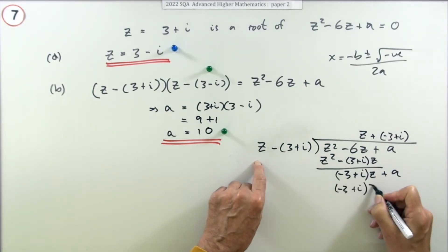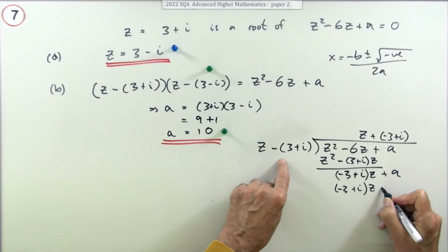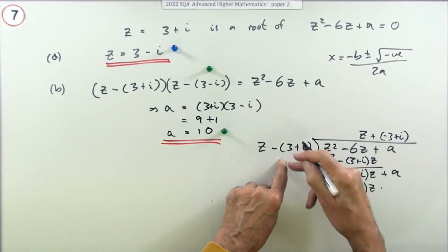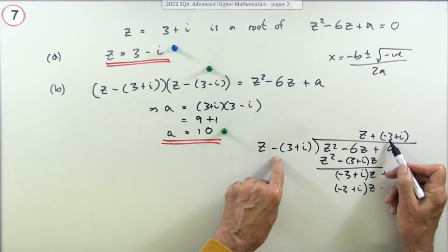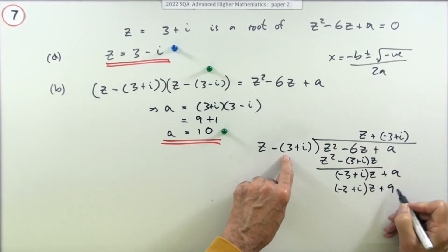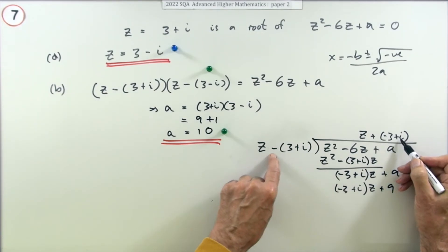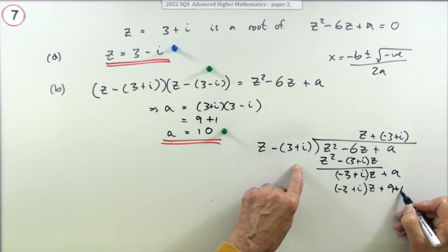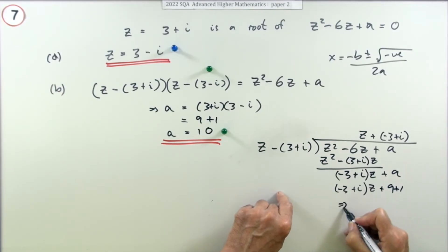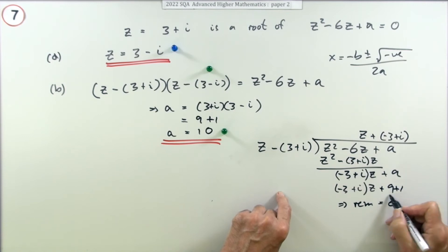So multiplying that out would give the negative 3 plus i times z. Now you're a little bit careful with the multiplication, so it's not quite the same form. You've got negative 3 times negative 3, which is 9, you've got a negative 1 but that one's negative so it makes it a plus 1, and of course the other parts cancel out so that comes to 10. Which means that if the remainder is 0, if the remainder is 0, it means that a must equal 10. That's quite a cumbersome way of doing it.